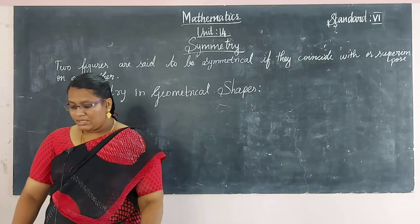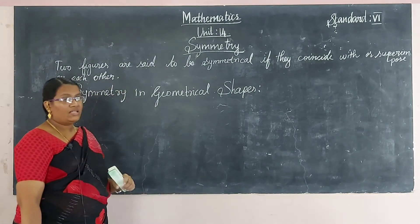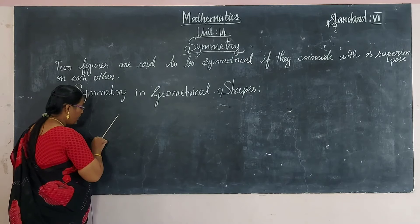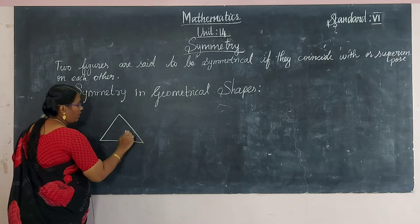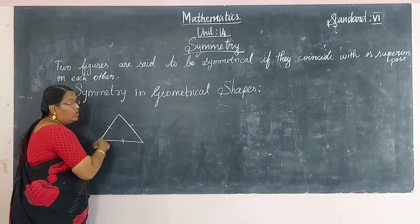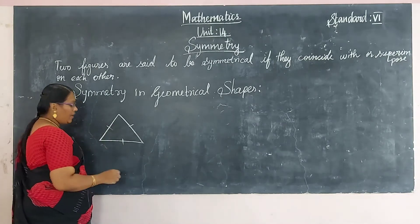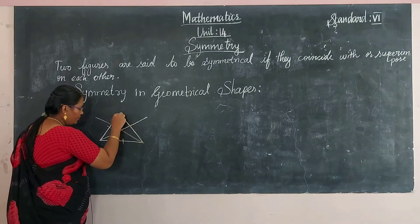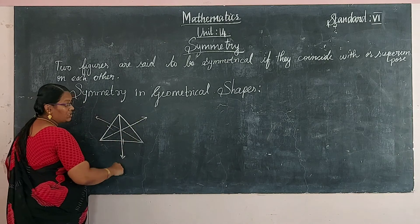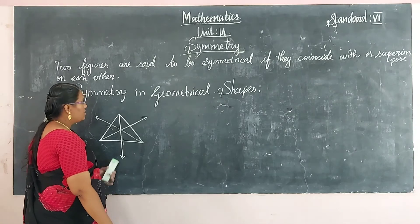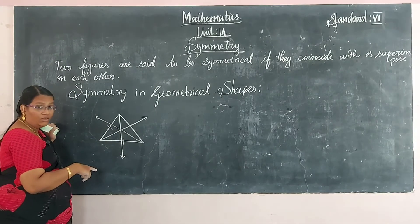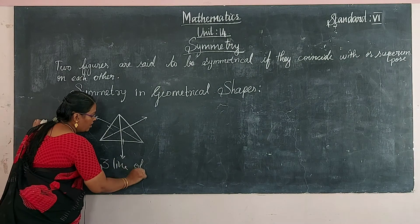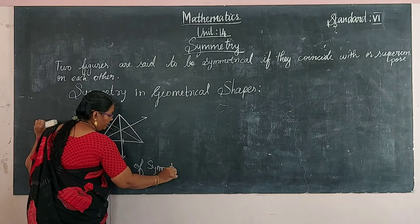All regular polygons have many lines of symmetry — as many as the number of sides. For example, the equilateral triangle: all sides are equal and all angles are equal, so it has three sides and therefore three lines of symmetry.